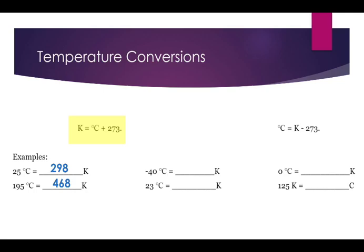Now, negative temperatures can exist in Celsius, but we still just take negative 40 plus 273. And that gets us 233 Kelvin. 23 Celsius is 296 K, and zero Celsius is, of course, 273 K. We just take our degrees C, add 273.